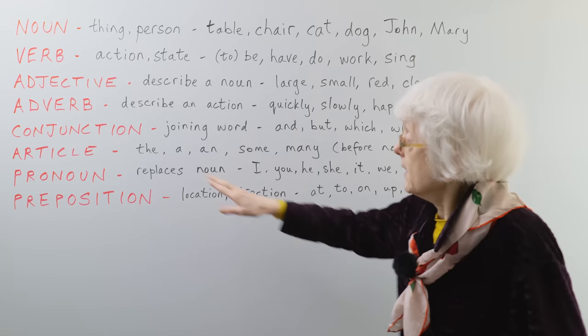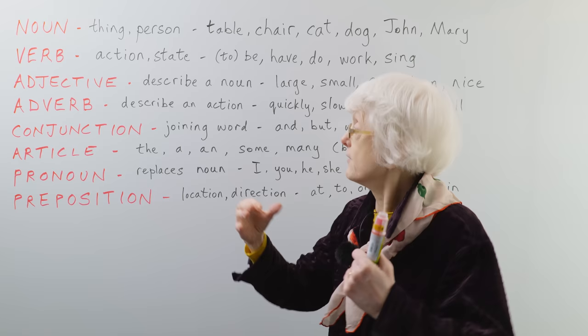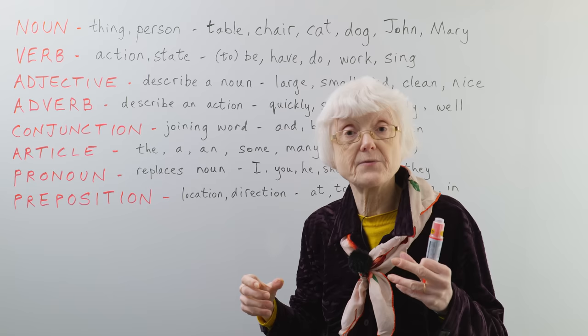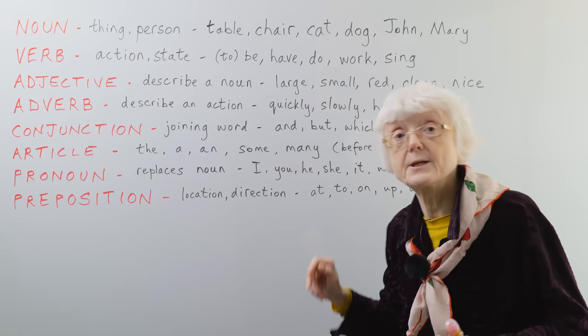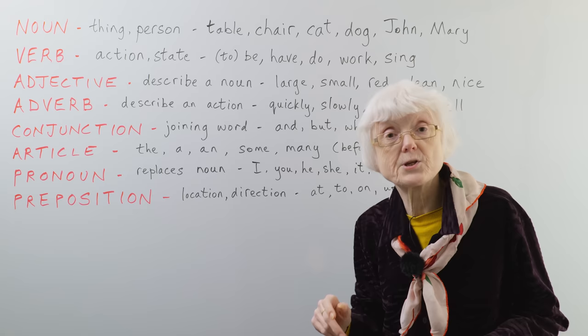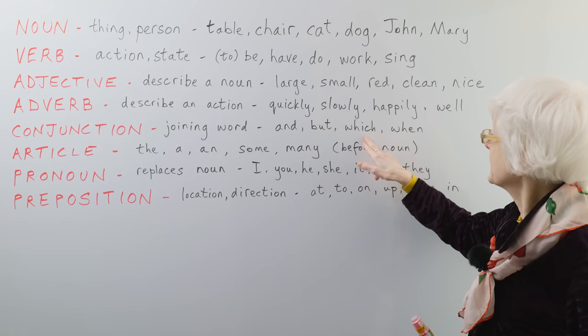Thinking of a sentence, the structure of it, a conjunction is a word that joins different parts of the sentence. An obvious one is and, and another is but. But you can also have other joining words, words like which, and when, and so on.